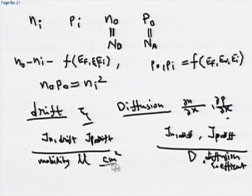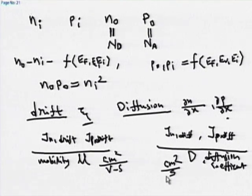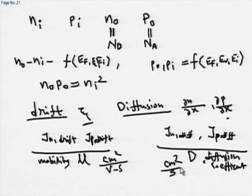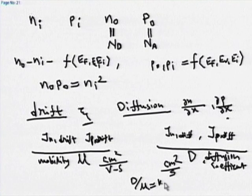Mobility has units of cm² per volt-second, and diffusion coefficient has units of cm per second. By the Einstein relationship, mobility and diffusion coefficient are connected. They are very important material parameters for solar cell operation. The Einstein relation gives D/μ = kT/q.